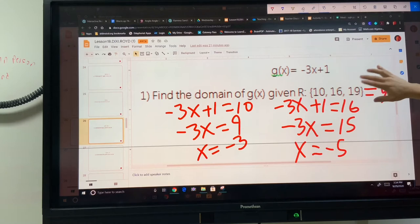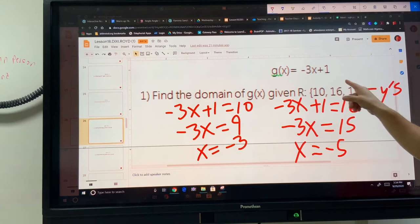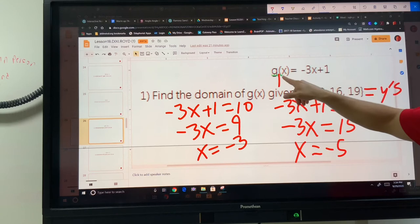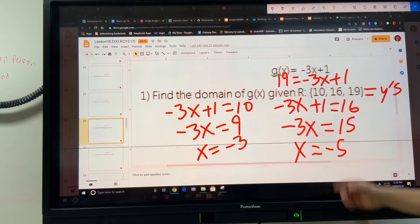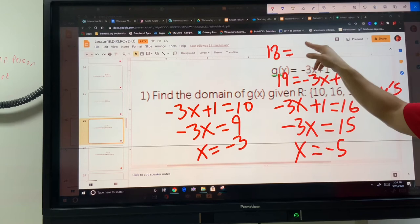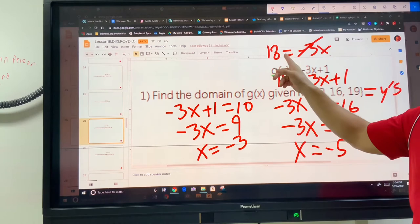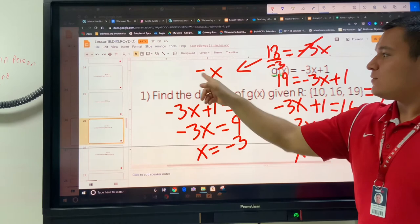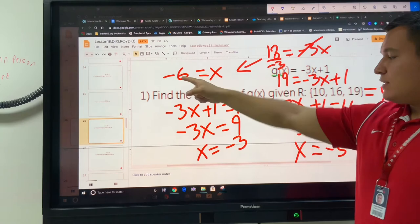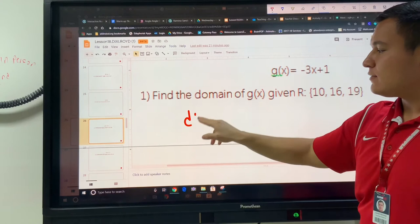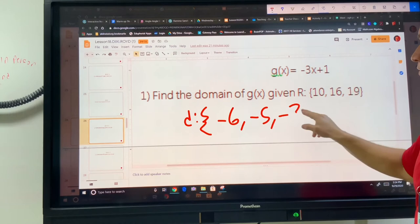I did those first two, and now we just have to plug in 19. 19 is the y, which means it is replacing all of that. So you're putting 19 equals negative 3x plus 1. Then you're going to subtract the 1. 19 minus 1 makes 18. Then you're going to divide by negative 3. Negative 3 dividing on the left will cancel out. Negative 3 going into 18 will make negative 6. So let's remember these numbers: negative 6, negative 3, negative 5. Domain: negative 6, negative 5, negative 3.